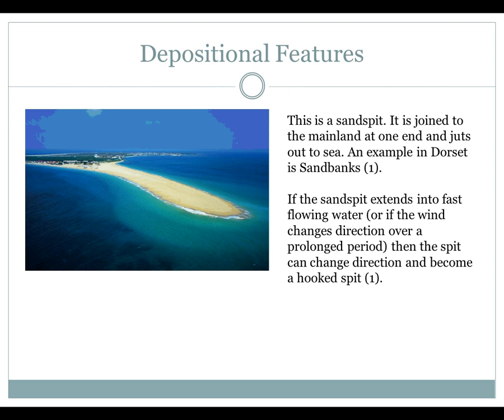So, depositional features. A sand spit is joined to the mainland at one end and juts out into the sea — an example in Dorset is Sandbanks. If the sand spit extends into fast-flowing water, such as where a river meets the sea, the material is washed away or changes direction — and that is what we call a hooked sand spit.